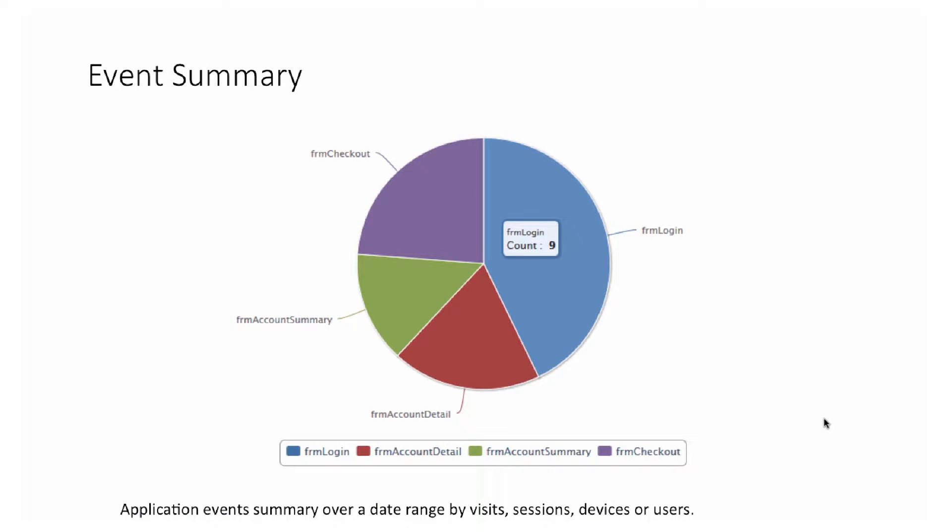The event summary report shows data for any event. An event can be a touch like a button click, form entry or exit, service request, gesture, or a simple network call. Any application event is automatically tracked, and you can see the slice of each event type — for example, which form was entered or what gesture was used most. This data can be classified by visits (absolute count), sessions, devices, or named users.